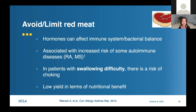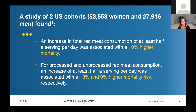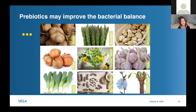A large study from the United States following thousands of patients long-term found that an increase in total red meat consumption of at least half a serving a day was associated with a 10% higher mortality risk. When broken down into processed versus unprocessed meat - processed meats being bacon, hot dogs, salami - the processed meat had an even higher mortality risk. If you're thinking about eliminating red meat from your diet, there's a lot of evidence that might be a good approach, as long as you're getting your protein and vitamins through other sources.